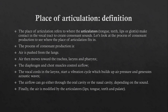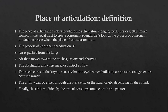The process is: air is pushed from the lungs, then air moves towards the trachea, larynx, and pharynx, which is a vent pipe. Then the diaphragm and the chest muscles control airflow. Then the vocal cords in the larynx start a vibration cycle which builds up air pressure and generates acoustic waves. Then the airflow can go either through the oral cavity or through the nasal cavity.